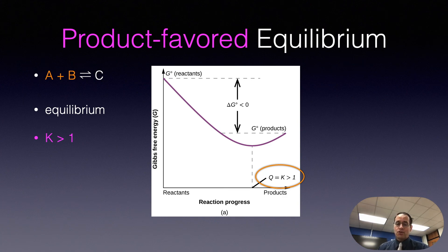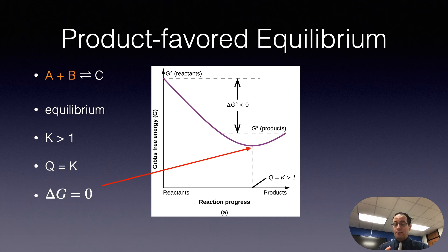the equilibrium constant is greater than one. Now at equilibrium, which is that dotted line there in the center of the graph, which is at that minimum point, Q is equal to K. The reaction quotient is equal to the equilibrium constant. And also, it's very important to notice at this point that ΔG is equal to zero. The energy is now zero. You're not high energy reactants or high energy products. You're at the minimum there, which is ΔG is equal to zero.